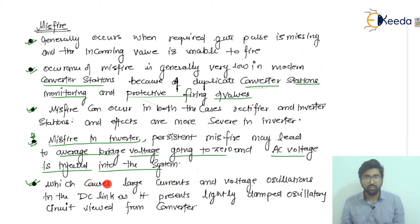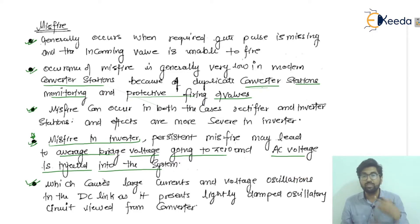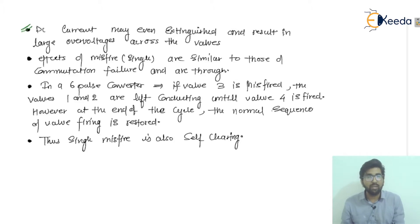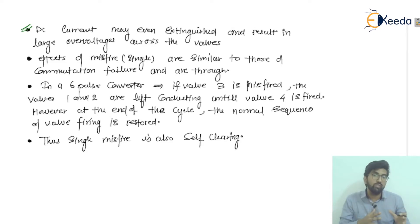This causes large currents and voltage oscillations in the DC links between the two converter stations. Large amounts of current and voltage oscillations with high frequency are seen, presenting a lightly damped oscillatory circuit viewed from the converter. The DC current may even be extinguished, resulting in large overvoltages across the thyristors — that is, if we extinguish the DC current using protective schemes or circuit breakers, this may result in large overvoltages across the thyristors.